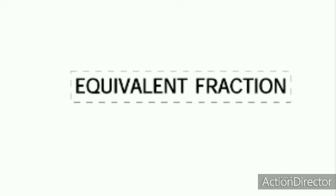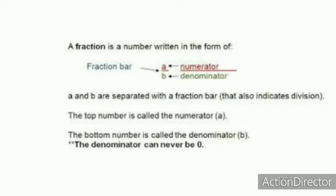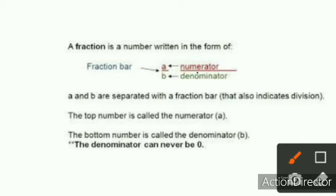Today we will discuss equivalent fractions. First, a fraction is a number written in the form of numerator and denominator, where a equals the numerator and b equals the denominator. The small dash in the middle is known as the fraction bar, and we read it as a upon b. The top number is called the numerator and the bottom number is called the denominator. The denominator can never be zero.